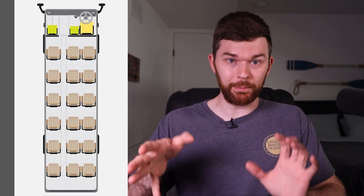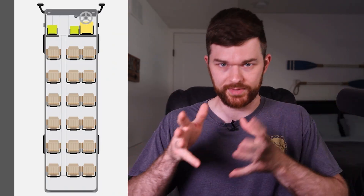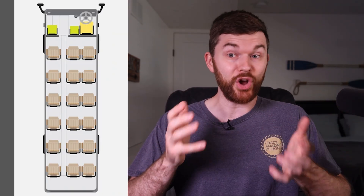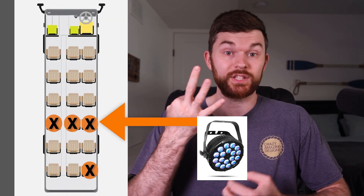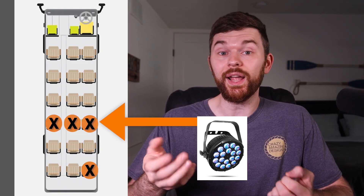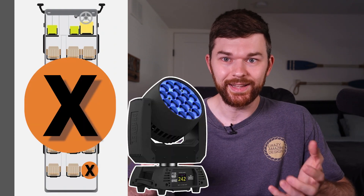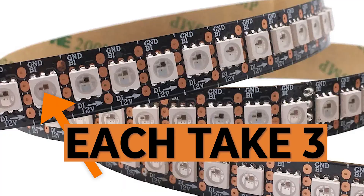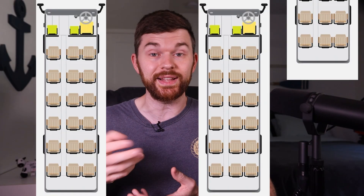Think of it like seats on a bus. You only have 512 seats in a single bus, single universe. A single non-color light takes one seat. An RGB light takes three seats. A moving light with 18 parameters takes 18 seats. Each pixel in an LED strip takes three seats, which adds up to hundreds of seats gone instantly. The good news is that we can add buses to our fleet the same way we add universes to our lighting system.